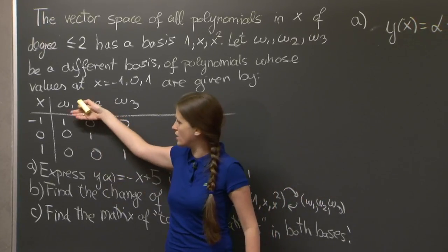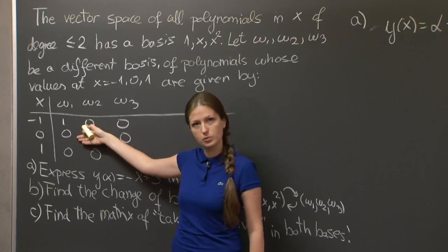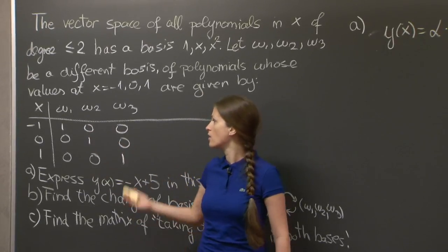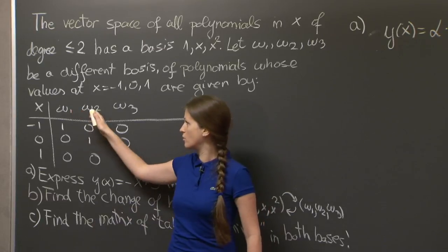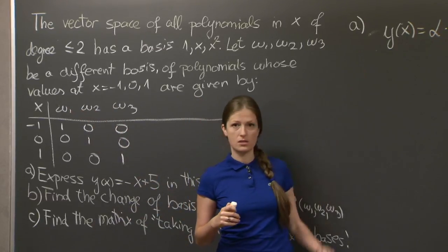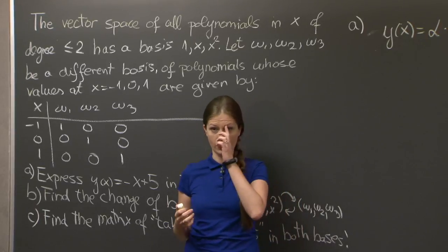So a quadratic polynomial - all the information we need about it is its values at three points. Find a, b, and c. Find w1, w2, w3 explicitly. And then go back to this system and try to find alpha, beta, and gamma.